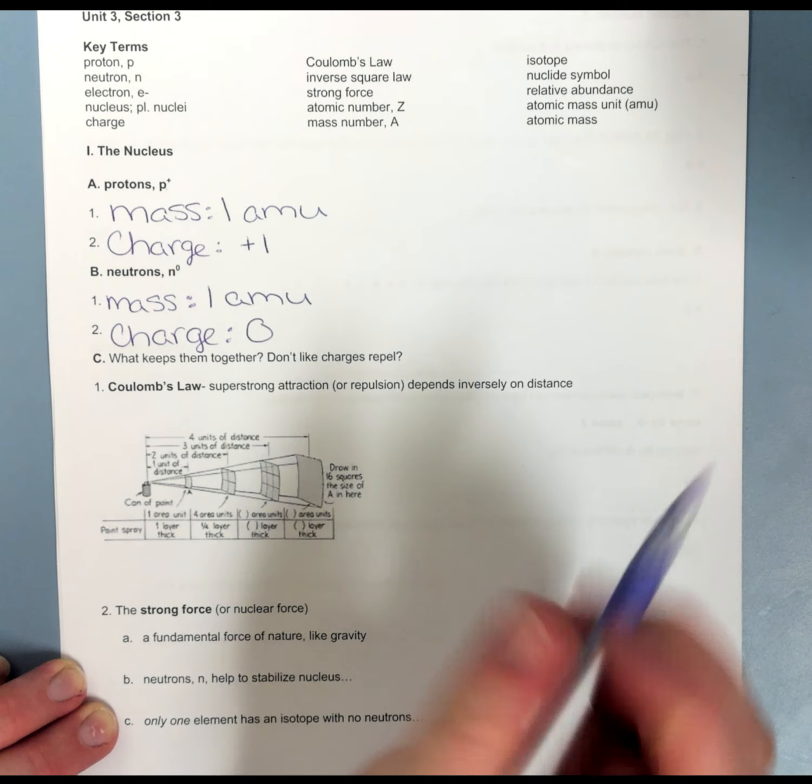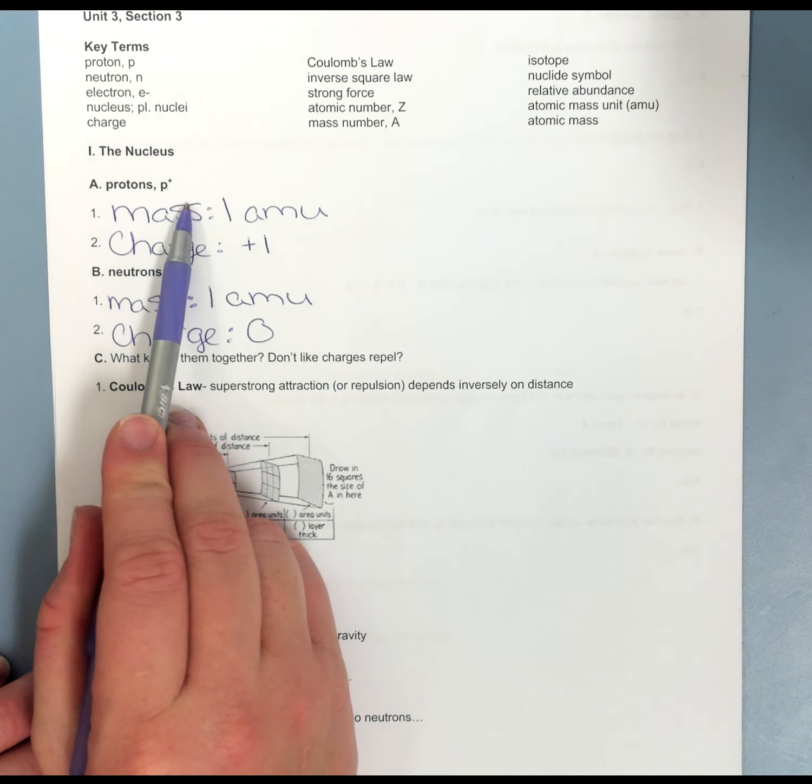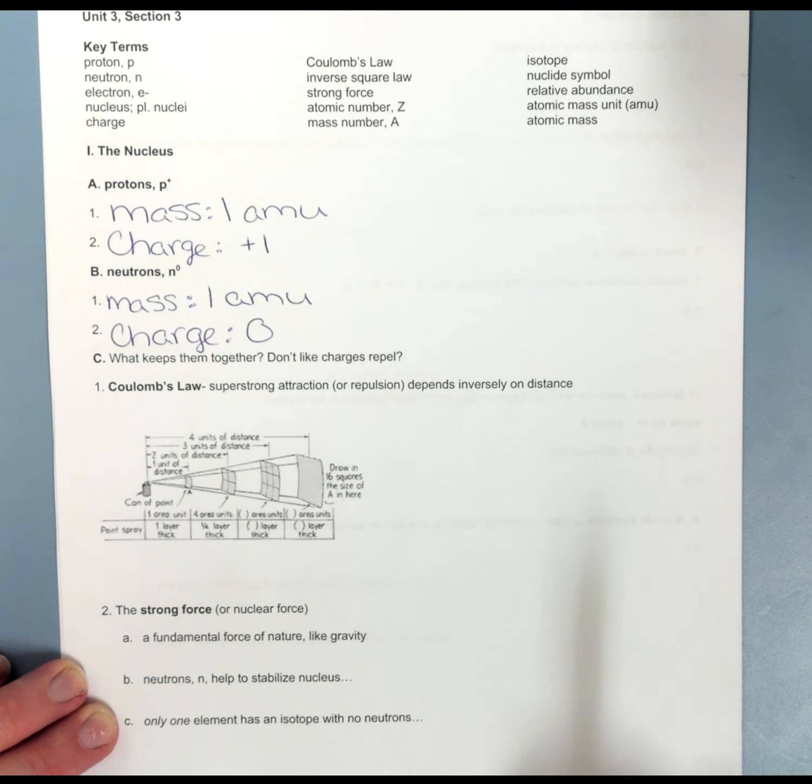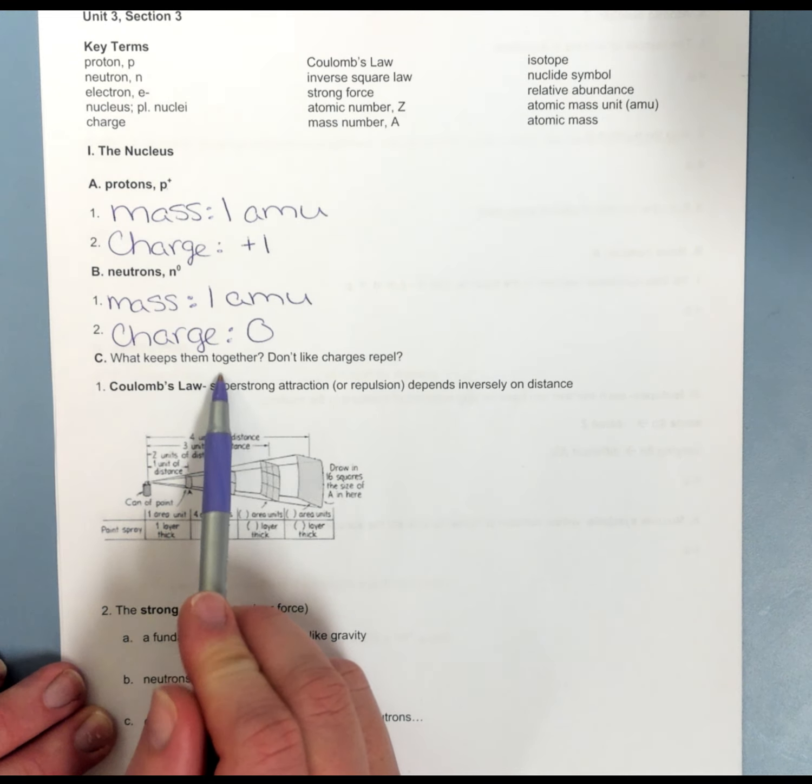If I have a bunch of positive particles in my nucleus, according to Coulomb's Law, we know that opposite charges attract, like charges repel. So how is this atom kept together? Why doesn't it just totally blow apart?